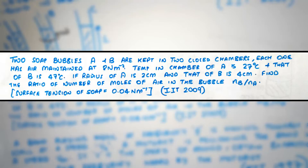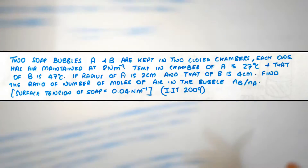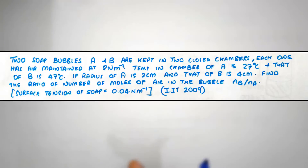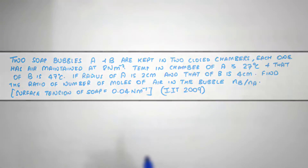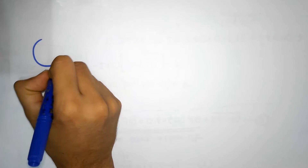Take a moment to go through the question and see whether you can try and tackle this problem yourself, and when you're ready let's solve this. First, let's make a drawing of whatever is given — we have been given that there are two soap bubbles.